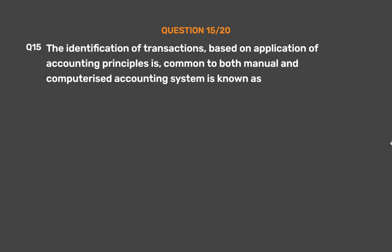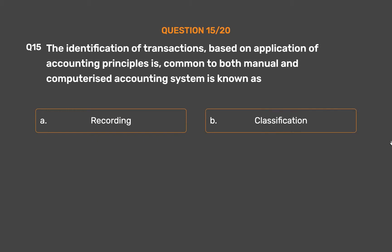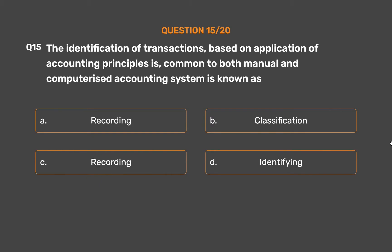Question number 15. The identification of transactions, based on application of accounting principles, common to both manual and computerized accounting systems is known as: Option A: Recording. Option B: Classification. Option C: Recording. Option D: Identifying. The correct answer is Option D: Identifying.